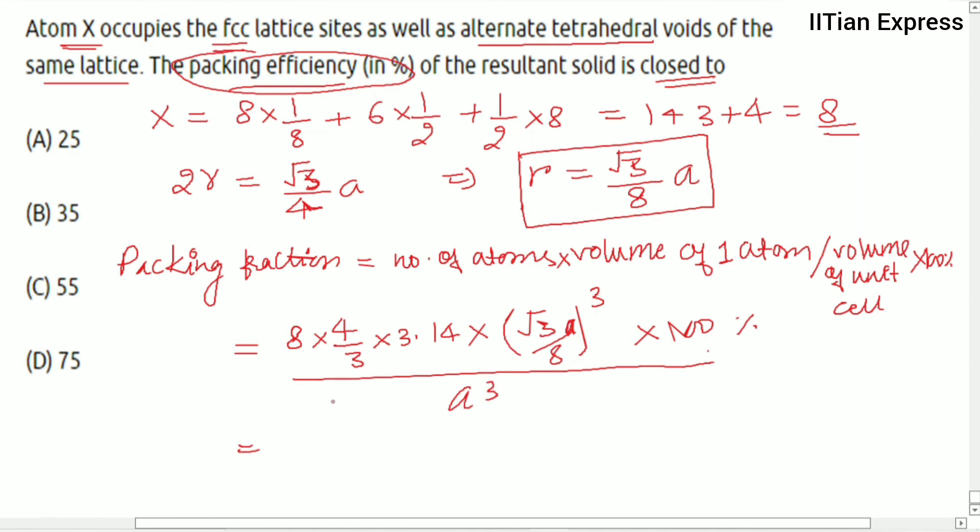When we are going to calculate this or simplify this, we are going to get around 35 percent. You can solve this, you can simplify this, you will get around 35 percent. So option B is going to be the correct answer.